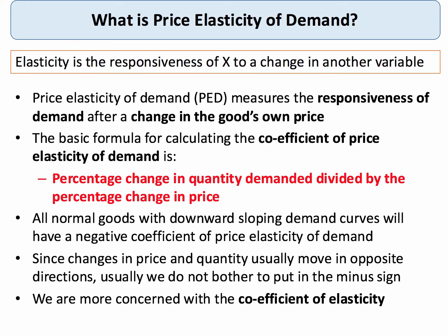Normal goods have a downward sloping demand curve, so we know that the coefficient of price elasticity will be negative. What we're more concerned with is not the sign, but the actual value — the coefficient of elasticity. And that's what we're going to look at in this short revision video.